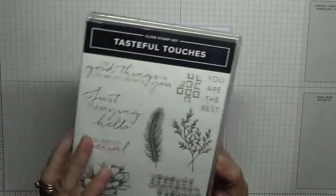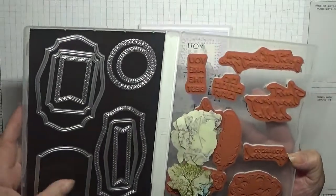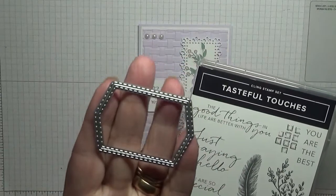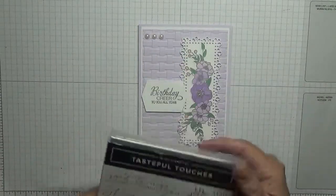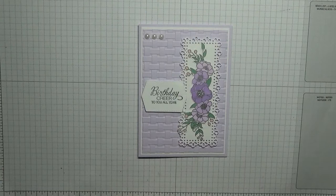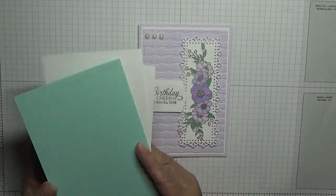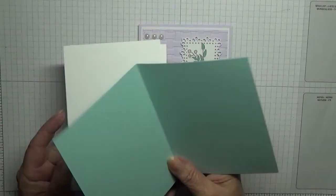I used Tasteful Touches dies, which is this die for the sentiment. Cardstock I've got is Pool Party. I've changed the color and it's eight and a quarter by five and seven eighths, scored at four and one eighths.